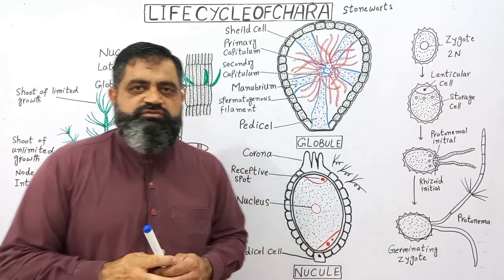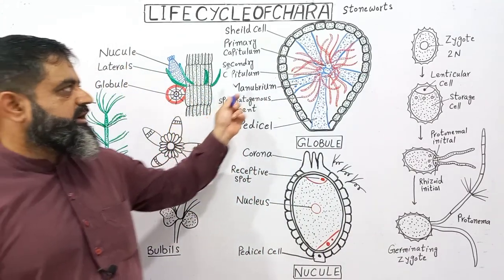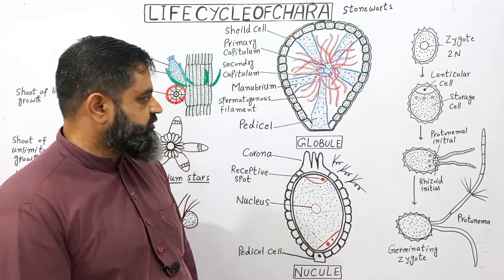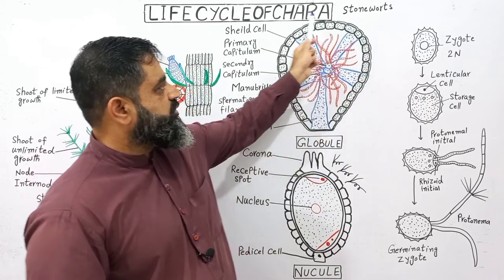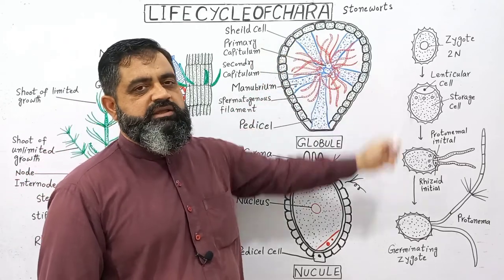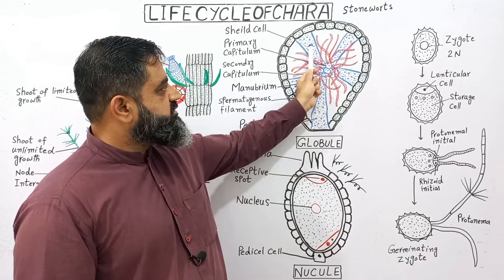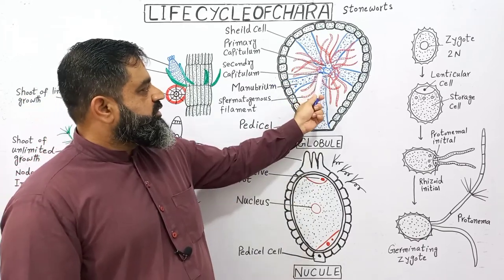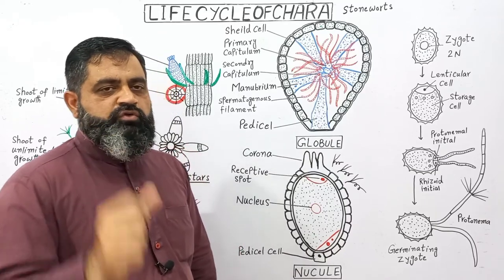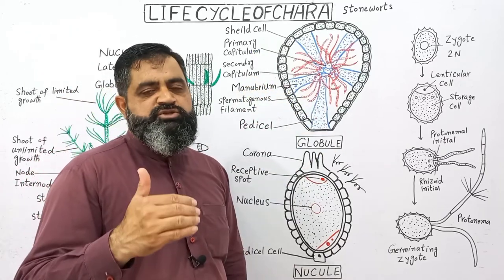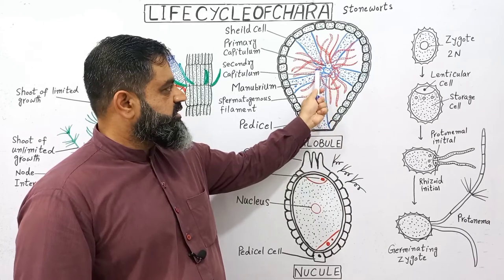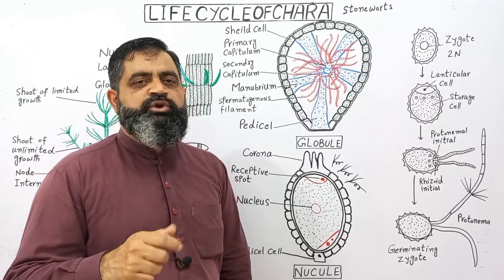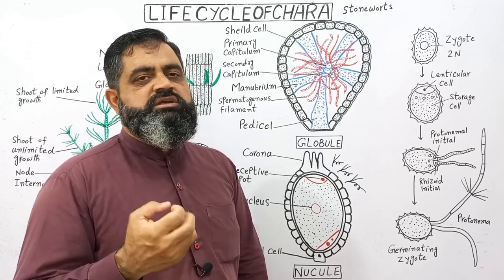Let's look at the detailed structure of these fructifications. First, I have taken a globule and enlarged it. You can see there is a pedicel with which the globule attaches to the stem or branch of the plant body. There is also a layer of cells around the body known as shield cells. Inside the globule there are rod-like structures known as manubriums, which run from the center and terminate at the shield cell. In the center of the globule there is a part known as the primary capitulum, and from the primary capitula arise structures known as secondary capitula. These are specialized cells going to synthesize antherozoids, which are the male gametes.